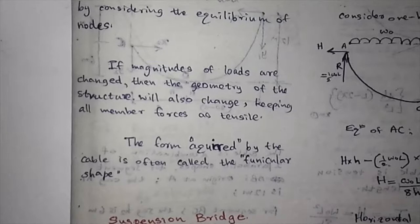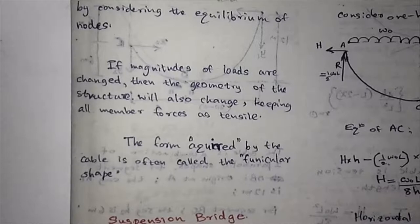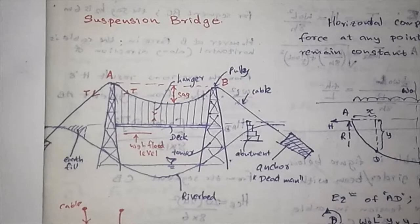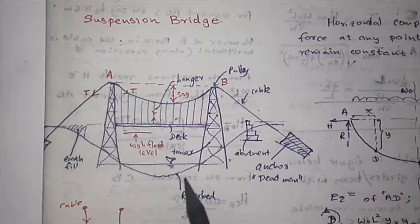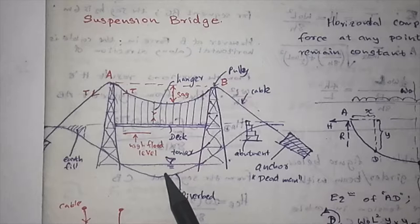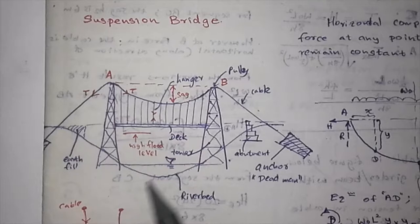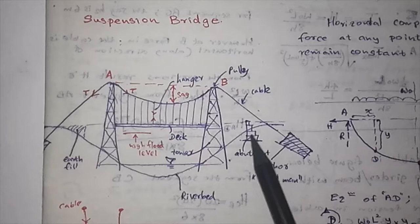Here we have a great example of the suspension bridge. You can see the river bed, water level is here, but water can come up in a high flooded condition, so we have to take that into consideration. This is the high flood level. You can form abutments on the two sides of the river and towers.